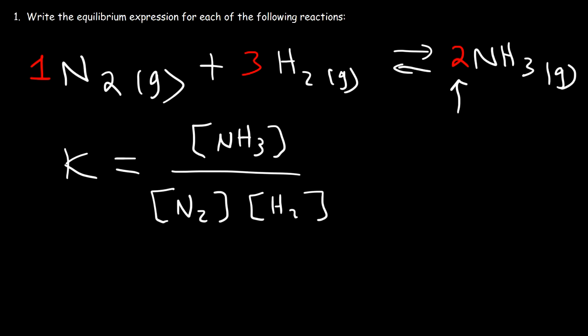So we have a 2 in front of NH3, so we need to put that here. We have a 3 in front of H2, so we've got to put that there. And if it's a 1, you don't need to write anything. So this is the equilibrium expression for the first example.